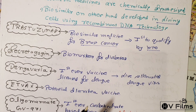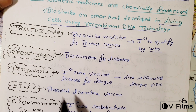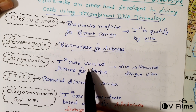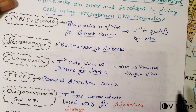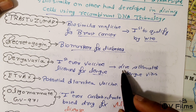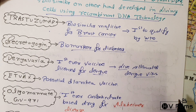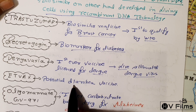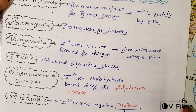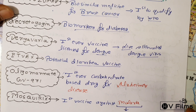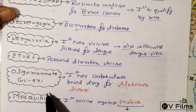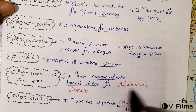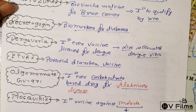HbA1c is a biomarker for diabetes. There is also a first-ever vaccine licensed for dengue, which uses a live attenuated dengue virus. ET-vax is a potential diarrhea vaccine that is still under development and not yet in use.